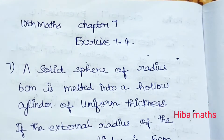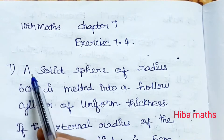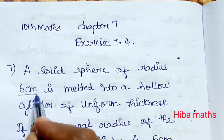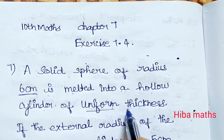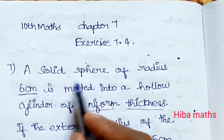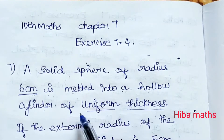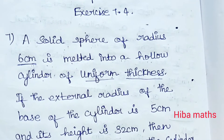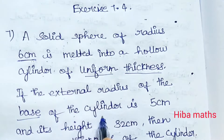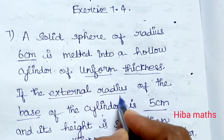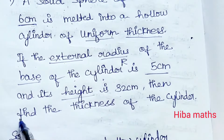Hello students, welcome to HibaMax 10th standard Math, Chapter 7 Exercise 7.4, 7th question. A solid sphere of radius 6 centimeters is melted into a hollow cylinder of uniform thickness. The external radius of the base of the cylinder is 5 centimeters and its height is 32 centimeters. Find the thickness of the cylinder.